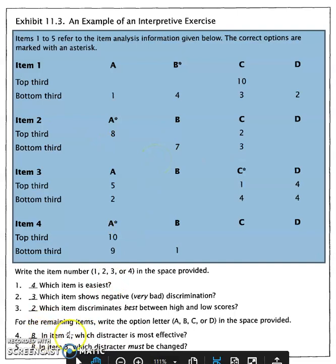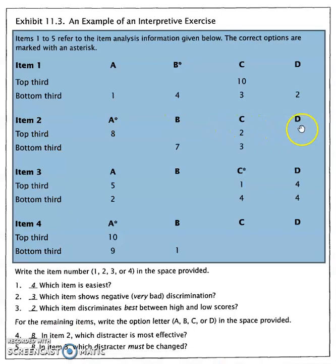The remaining items it asks, right, for item two, which distractor is most effective. So if we look at number two, the correct answer is A. So between B, C, and D, which option was most attractive for students who chose the wrong answer? Obviously, it's B.